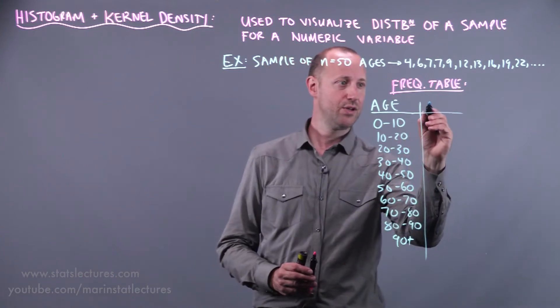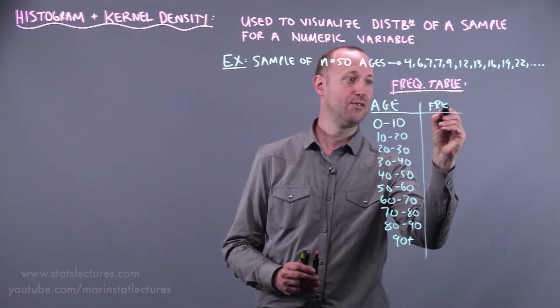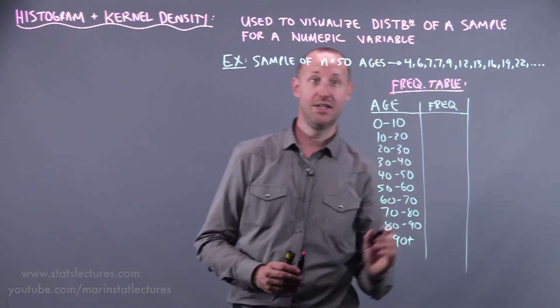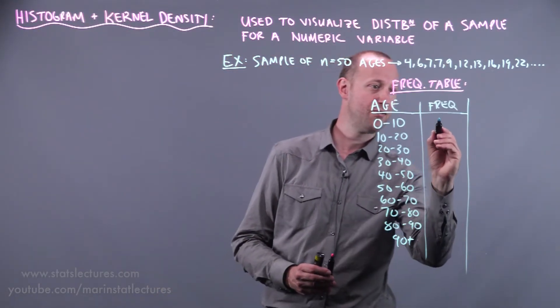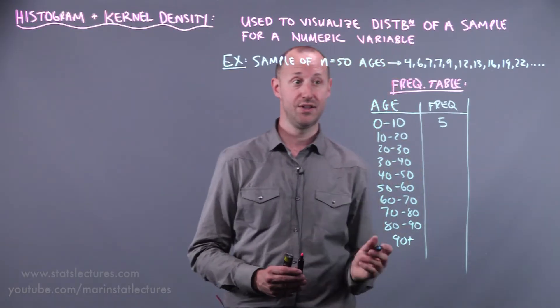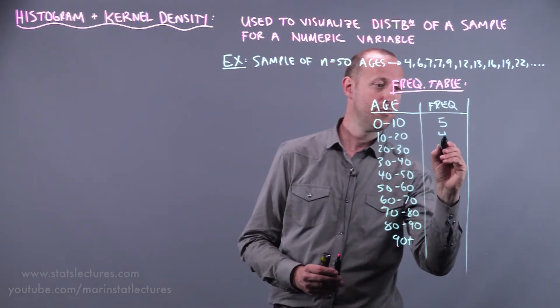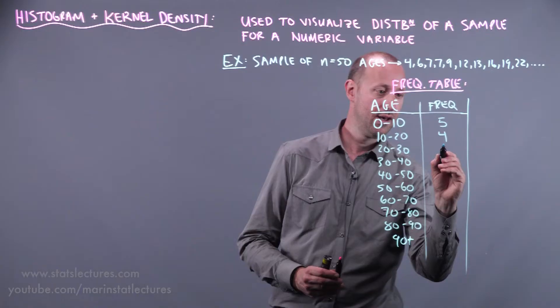So the next thing we can do is calculate the frequency or how many people fall into each of these different bins. So let's just suppose that we had 5 people falling in the 0 to 10, 4 falling in the 10 to 20 and I'll just fill in the rest.